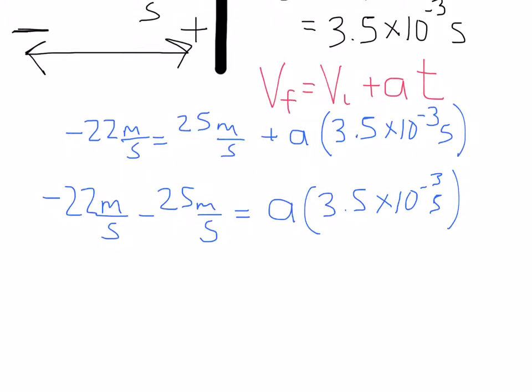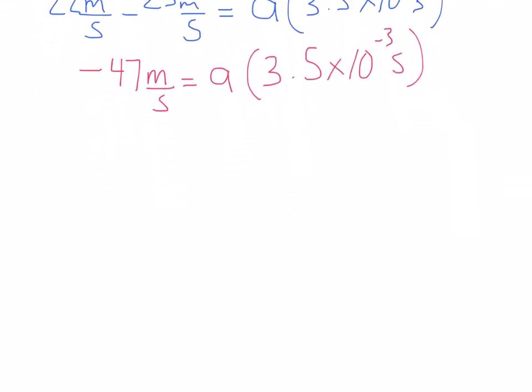Here we end up with minus 47 meters per second is equal to A times 3.5 times 10 to the negative 3 seconds. Now I'm going to take this time here and divide it, which means I'm going to be multiplying by the reciprocal. So this stays the same, minus 47 meters per second, times 1 over 3.5 times 10 to the negative 3 seconds is equal to the acceleration.